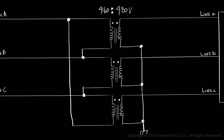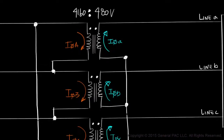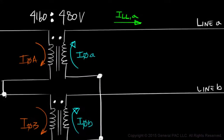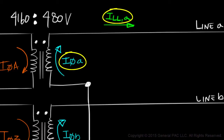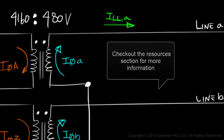We understand from Part 3 that Primary Phase A, B, and C Currents flow through the polarity side of the primary windings, and the Secondary Phase A, B, and C Currents flow out of the polarity side of the secondary windings. For a Y-Connected Transformer, it's very easy to see that Phase Currents and Line Currents are both equal.